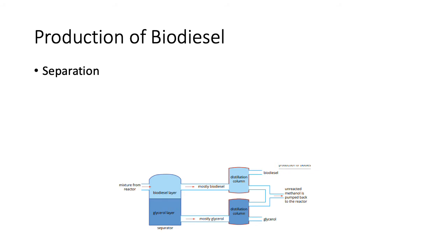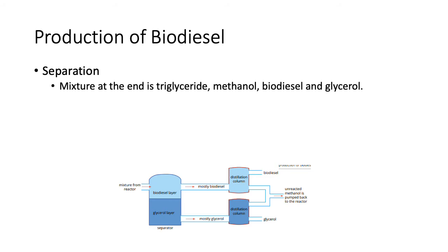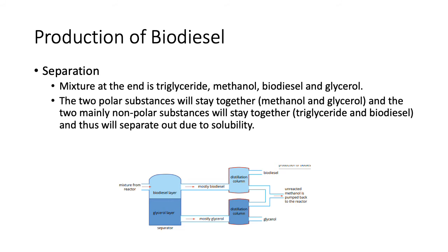After the reaction, you take the mixture — which is roughly 98% pure from base catalysis or about 92% pure from lipase catalysis — and separate it out. The mixture contains triglyceride, methanol, biodiesel, glycerol, and some catalyst. There are two polar substances — methanol and glycerol — and two non-polar substances — triglyceride and biodiesel — which separate by solubility, like oil and water. The glycerol layer sinks while the triglyceride and biodiesel layer floats.